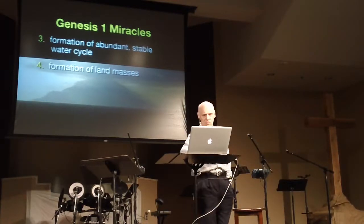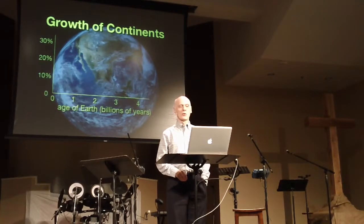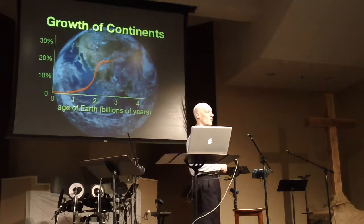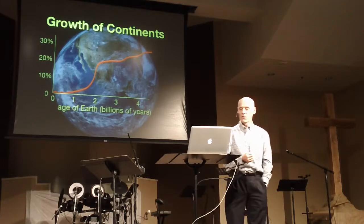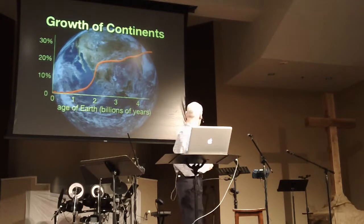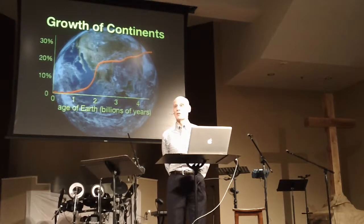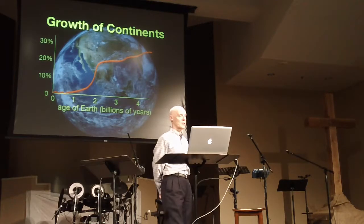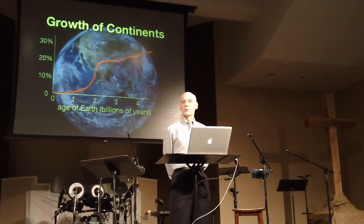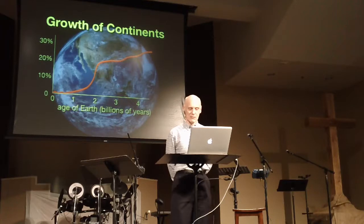Today we understand plate tectonic activity in sufficient detail that we can reconstruct the growth of the continental land masses on planet earth. We can confirm that the earth started off as a water world, then a few tiny volcanic islands formed, and then plate tectonics kicked in and began to form continents. We have a very aggressive period of continental land formation when the earth is about 2 billion years old. Then it slows down, and the continents are continuing to grow to this day. Right now they cover 29% of the surface of the earth, which is what you need for a global human civilization.